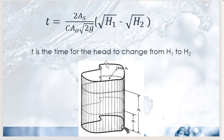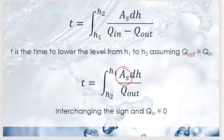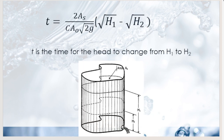That completes the unsteady flow equation. Now let's move to the next topic: weirs. Weirs are defined as overflowing structures built across an open channel for the purpose of measuring or controlling the flow of liquid. Unlike orifices and nozzles where we control discharge and velocity, weirs are based on Bernoulli's energy equation.